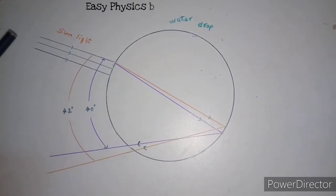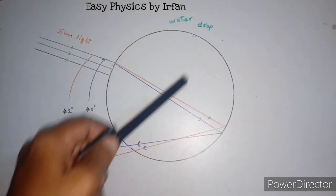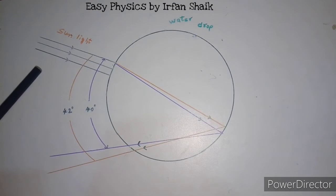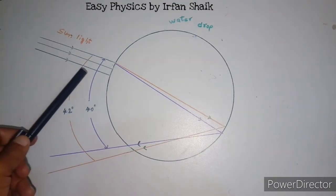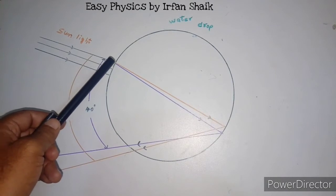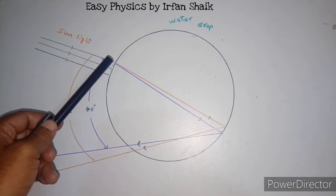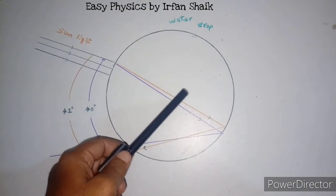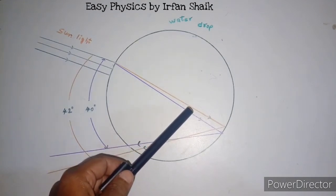Here a beam of parallel light rays is falling on a water drop. The rays of sunlight enter the drop near its top surface. At this first refraction, the white light is dispersed into its spectrum of colors, with violet color being deviated the most.